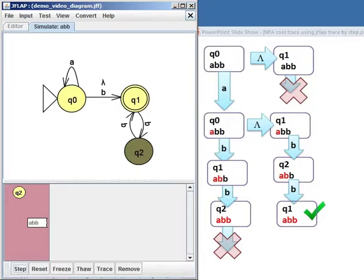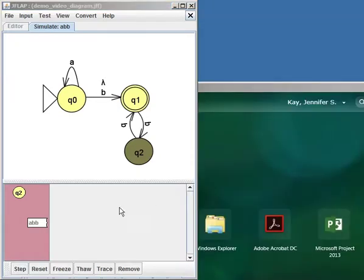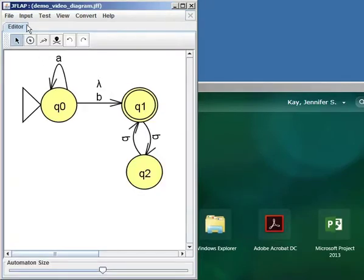Now, if you want to make it really nasty, let's close the simulator. We could add another lambda transition from Q1 to Q2. So let's just click. So now we have a lambda transition from Q1 to Q2 also. So now we've got to be able to take some double jumps as well.